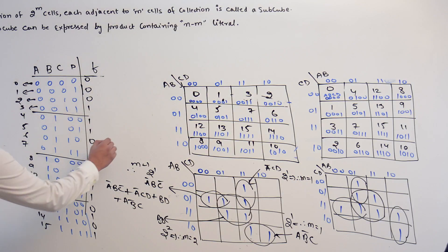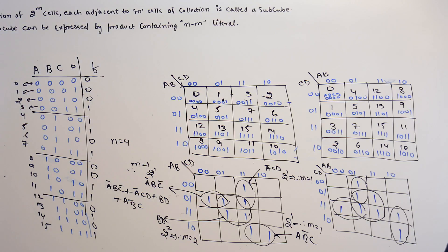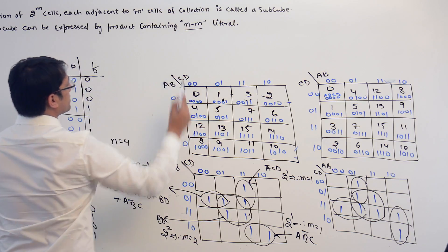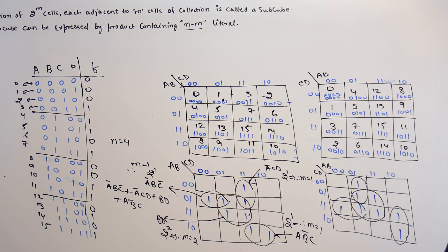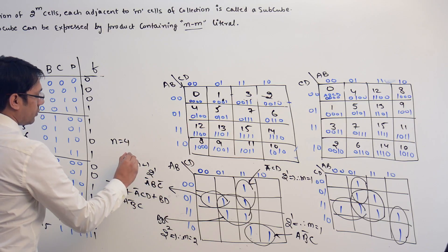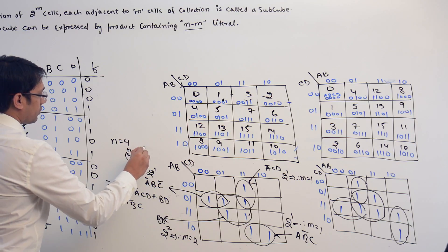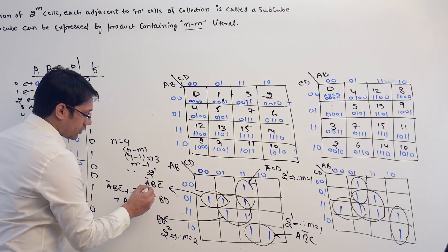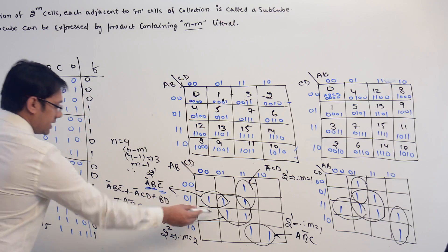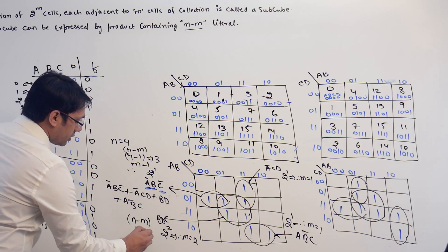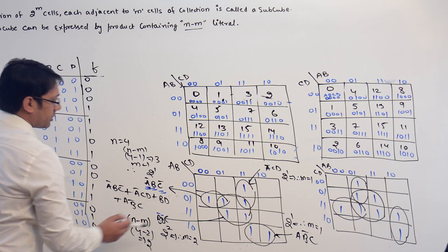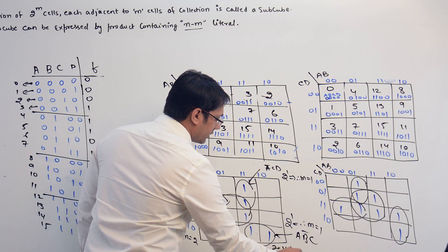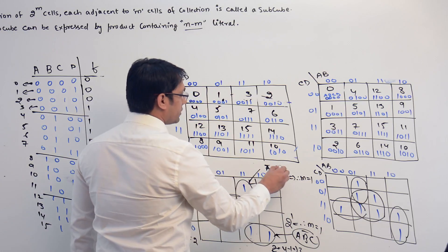What are the number of literals? The number of variables here are 4: A, B, C, and D. Every subcube will be representing N minus M literals. So this subcube represents 4 minus 1 equals 3 literals — and you can clearly see this subcube has 3 literals. This subcube represents N minus M, that is 4 minus 2, which equals 2 literals. The remaining subcubes each represent 4 minus 1 equals 3 literals.